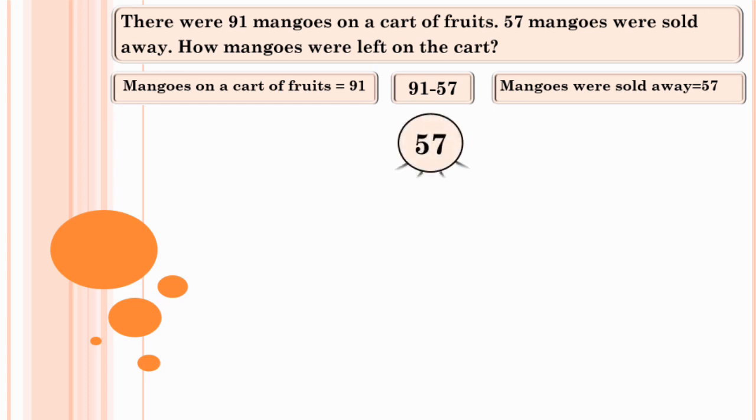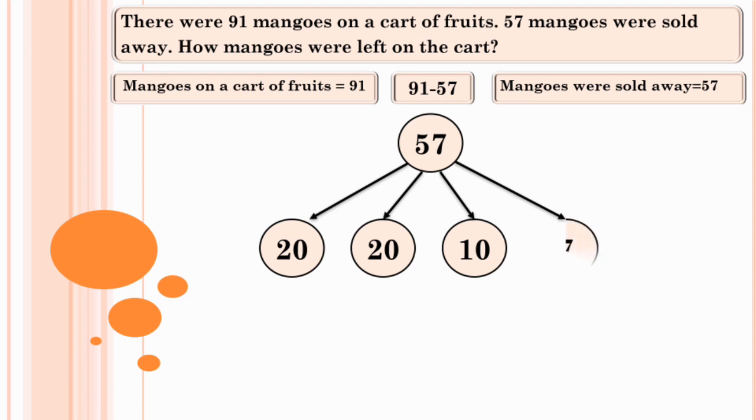Yes. 20, 20, 10, and 7. These are the 4 parts of number 57. Let's subtract now.